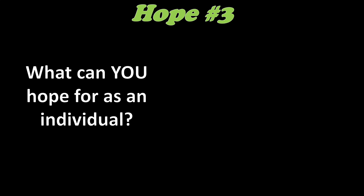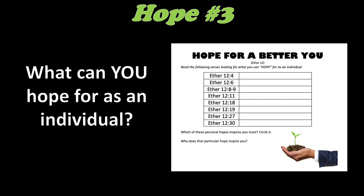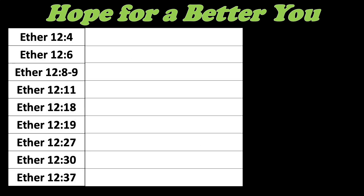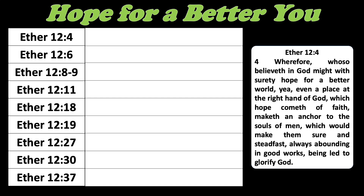Hope number three. So far we've talked about hope in collective terms — societies, nations, the Church. But what about you as an individual? You could read this chapter through the lens of your own personal life. I'll give you a number of verses to examine — your students will read the following verses looking for things that they, as individuals, can hope for and exercise faith in. Ether 12:4 — you can find hope for a better world for yourself in the next life and in this one. If you can connect yourself with that anchor of faith and hope, it will make you sure and steadfast and always abounding in good works, leading you to glorify God.